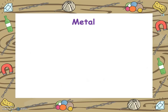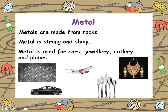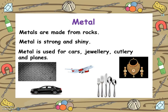The next material is metal. Metals are made from rocks. Metal is strong and shiny. Metal can be used for cars, jewellery, cutlery and planes. Many of these items we use every day in our lives. Take a look around to see if you can see any in your home.